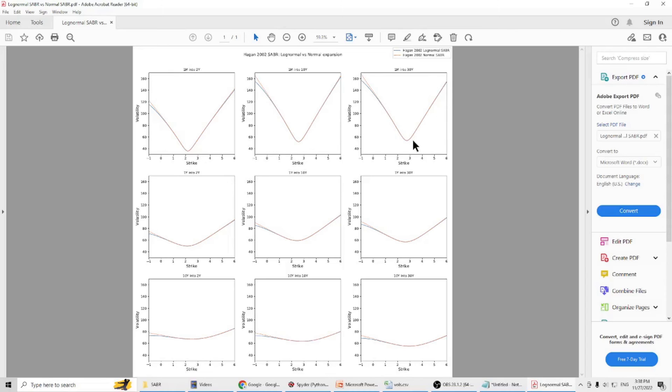They all have a similar pattern. At the money, you can see the two functions, the lognormal model and the normal model, are basically the same. But when it moves to the left, when the strike price is very low, it shows difference.